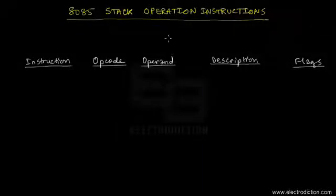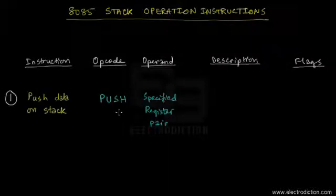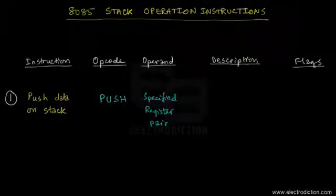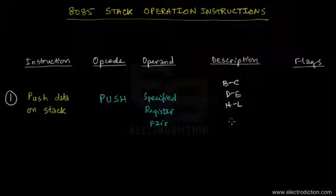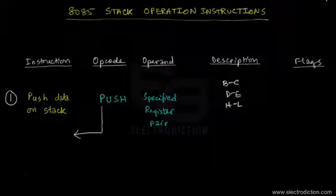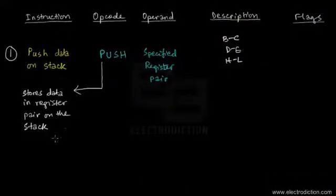Welcome to our tutorial on the 8085 stack operation instructions. Here we're going to cover instructions that are mainly used when working with stacks. Let's start with the PUSH instruction. The PUSH instruction has as its operand a specified register pair — it can be the BC, DE, or HL register pair. What the PUSH instruction basically does is store the data present in a register pair onto the stack.